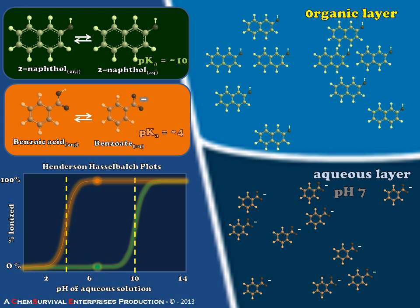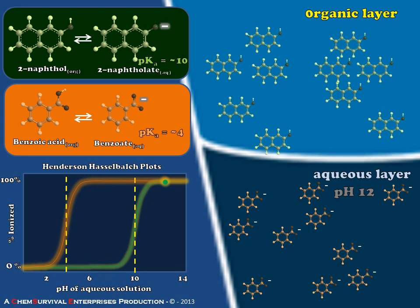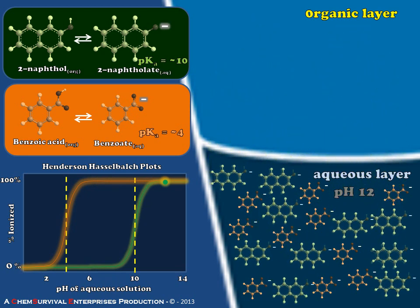But if we change our system again by moving to an even more basic region, what we find is that now we're dealing with naphthalate, which is also soluble in water, and we're back in a situation where we're not separating the two compounds. So we arrived at the conclusion that a pH of about 7 was optimal for separating naphthol and benzoic acid.